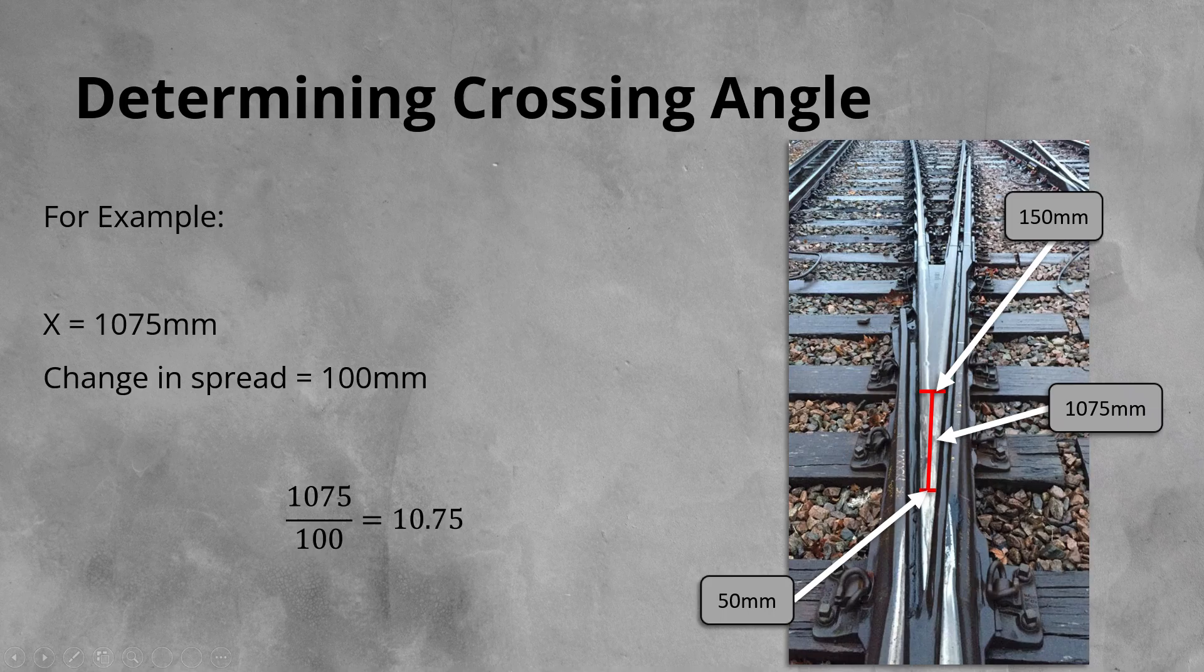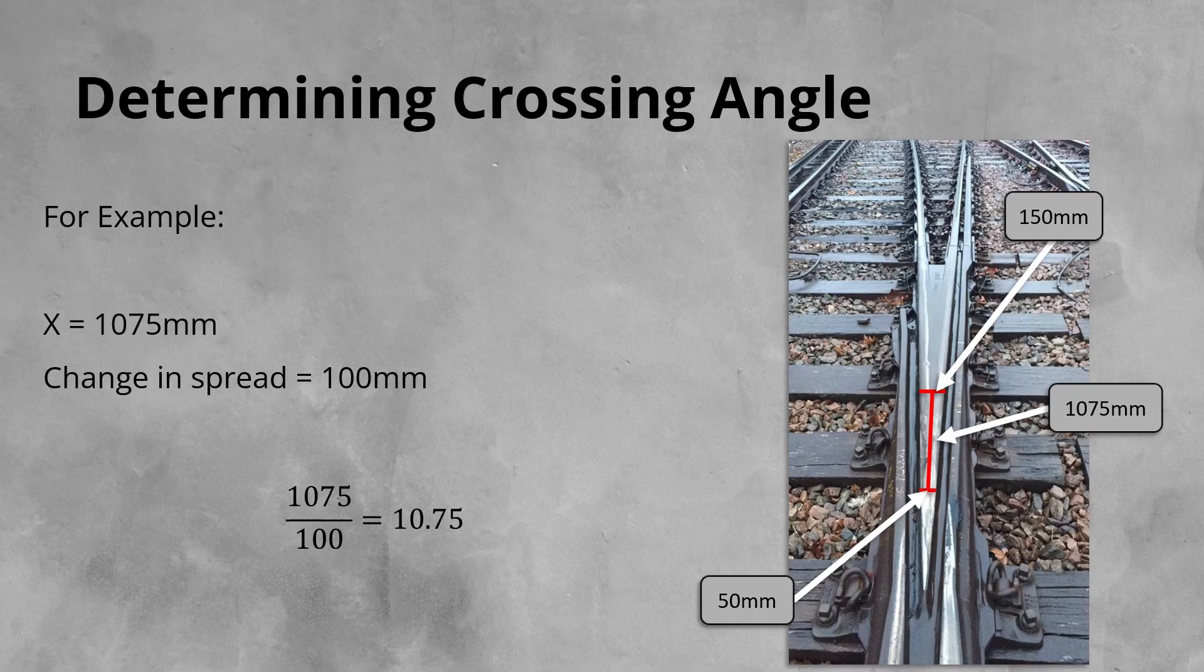This method works well if the places the measurements are taken on the crossing need to be tweaked for some reason, for example if the edge-to-edge measurement is taken at 150mm and 250mm. It can also be used when the measurements are taken in inches.